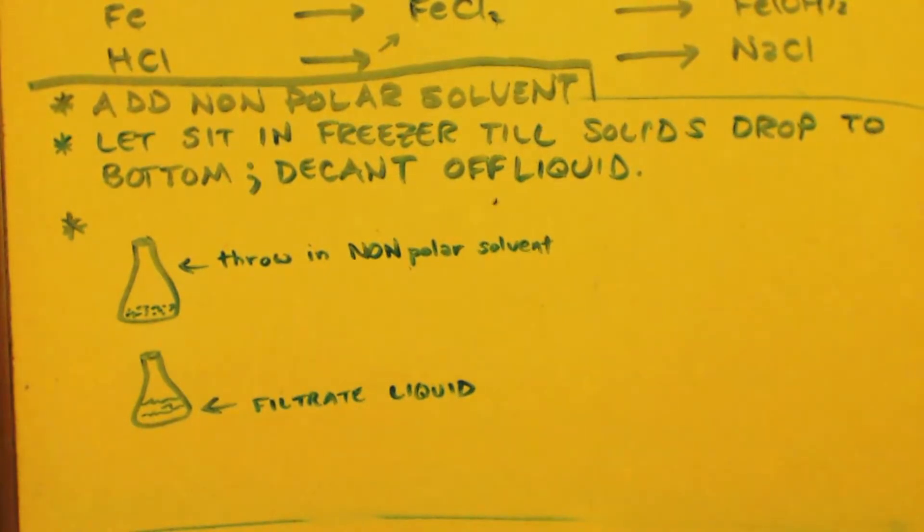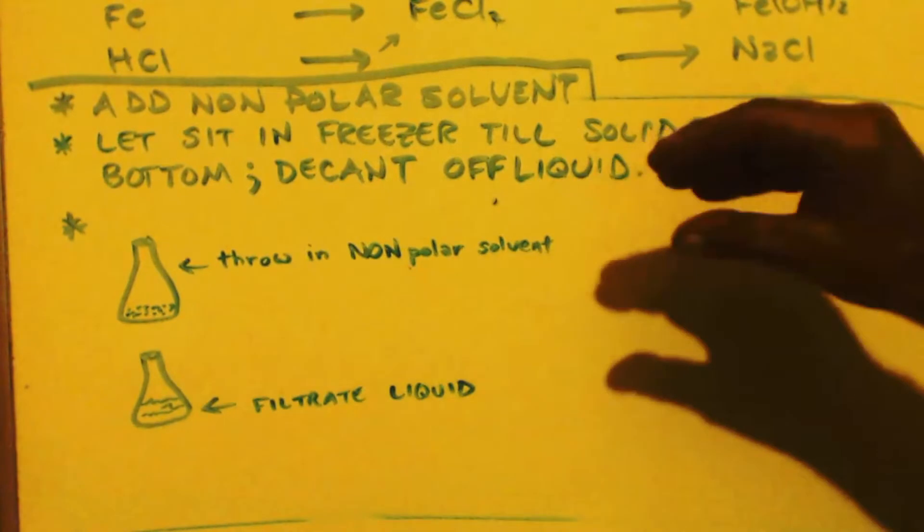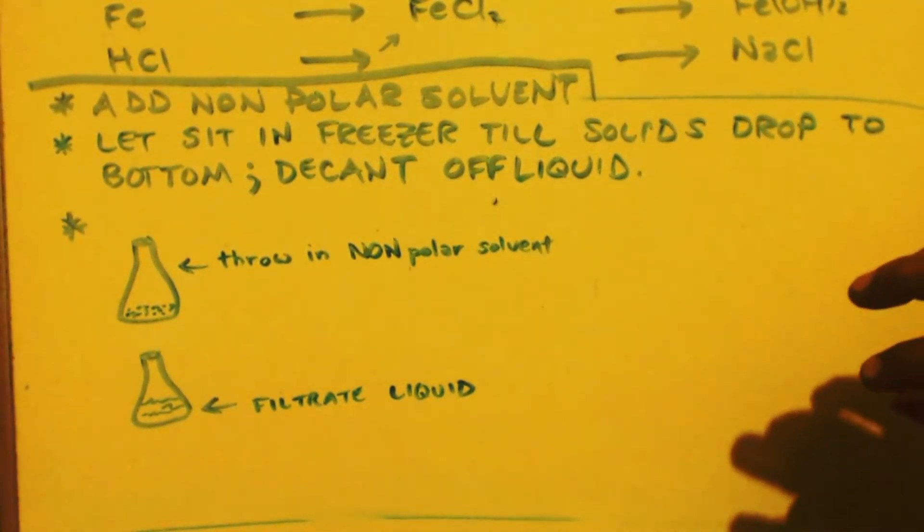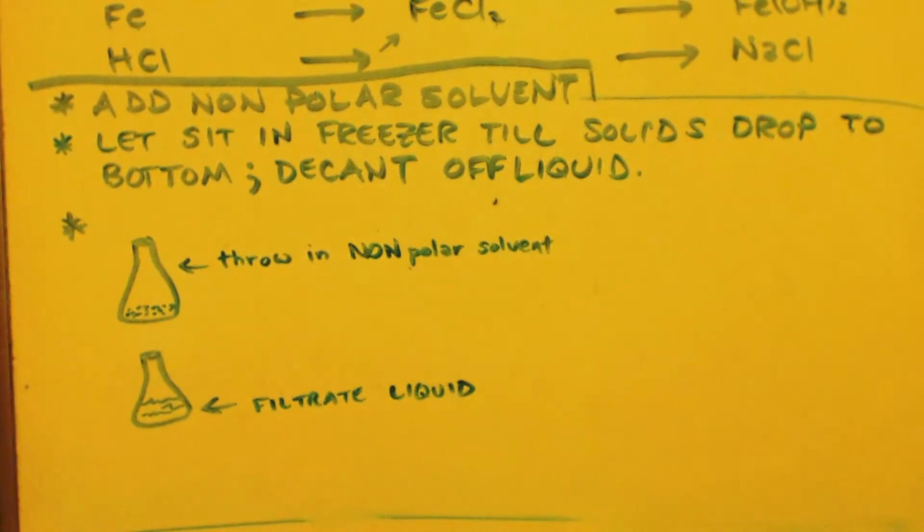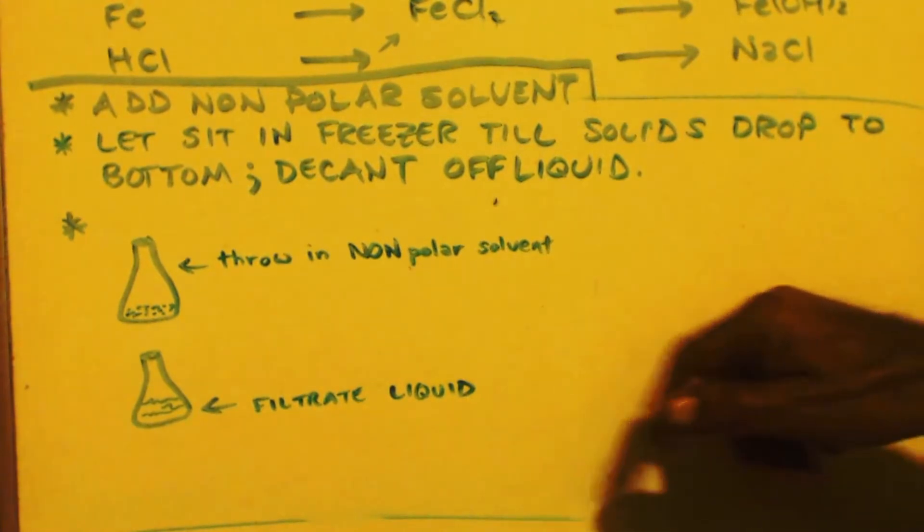Put it through your filter and then put that liquid into here. And then the cake, the solids in the filter, put some more non-polar solvent in there just to wash it out. Wash out them solids more. Suck that through so it's dry with a vacuum pump a little bit.